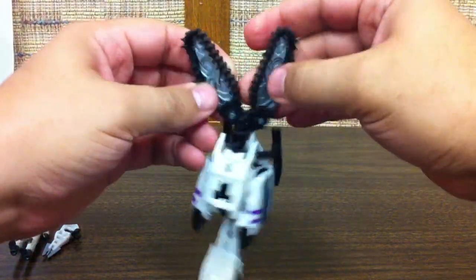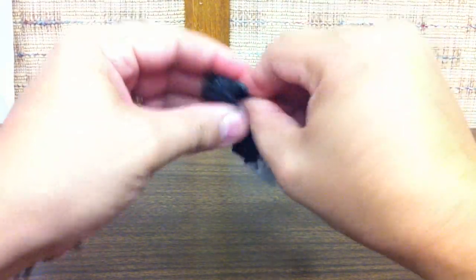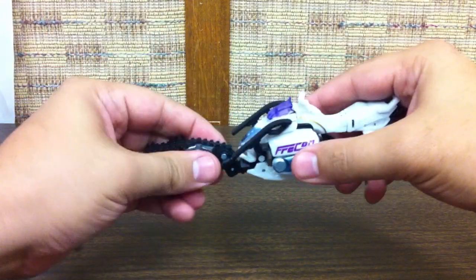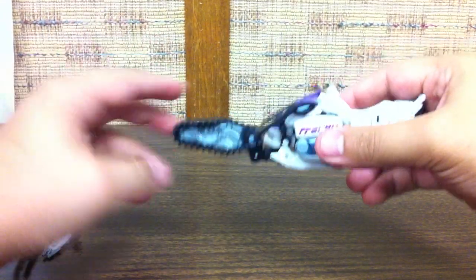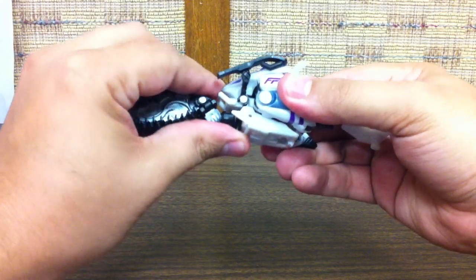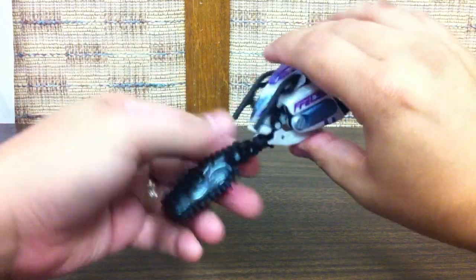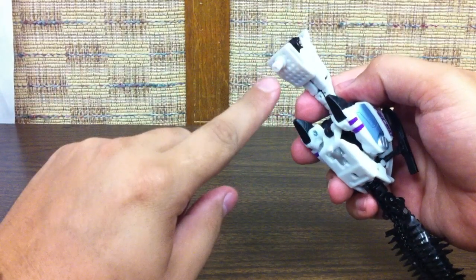Then you open up these panels, flip them around, and plug them back together this way. Bring it up, and essentially that's it to weapon mode. He ends up being a handheld chainsaw for our bigger robots.